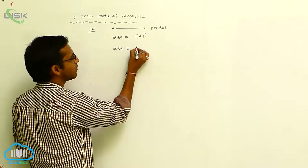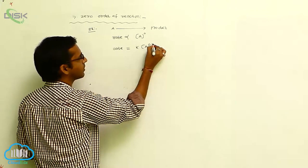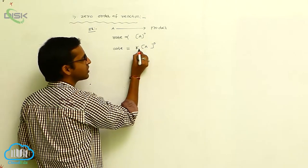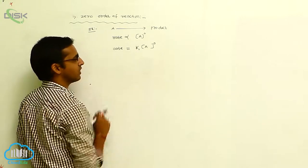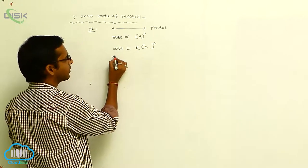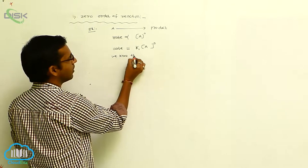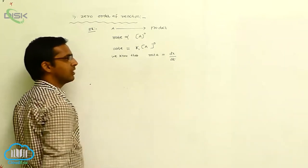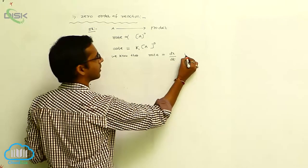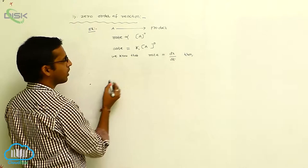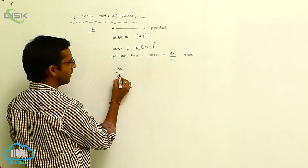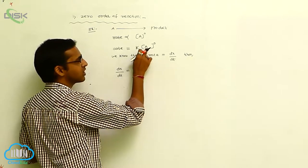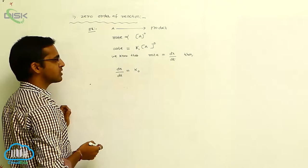So rate equals K into [A]⁰. Since its concentration is zero, the concentration term is denoted with K. That is your zero order of reaction. We know that rate is equal to dx/dt. So dx/dt is equal to K₀, because this value does not depend on the concentration term of the reactant.